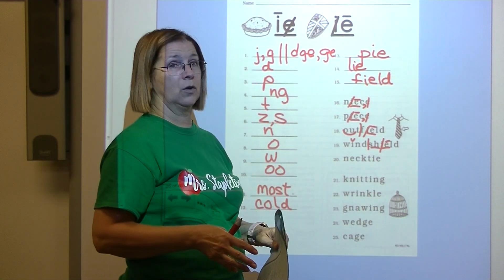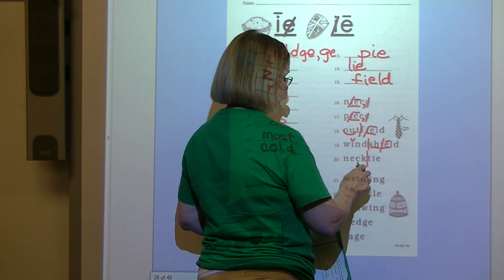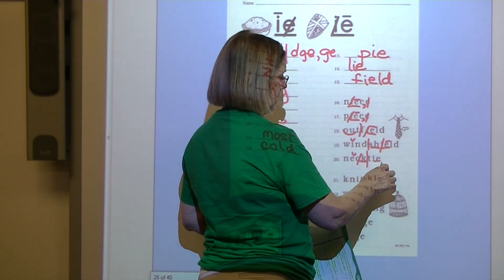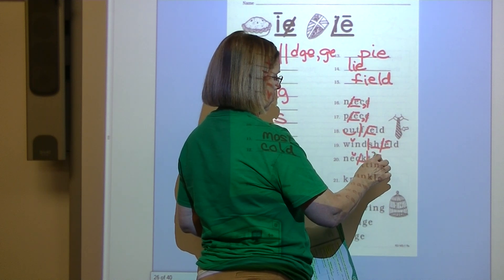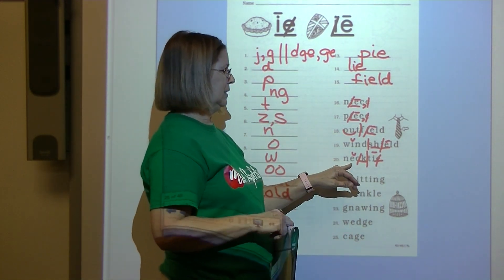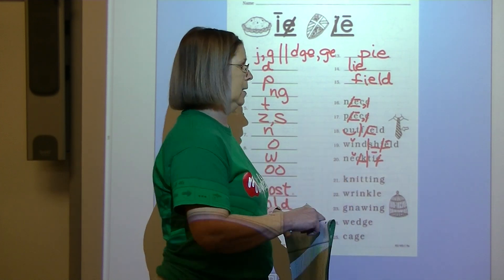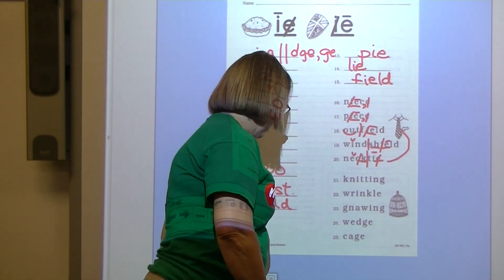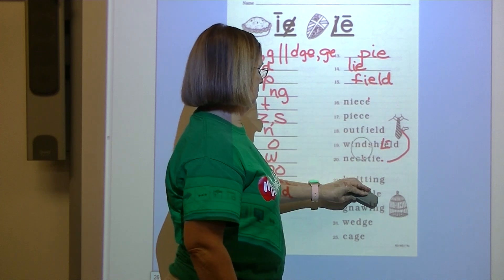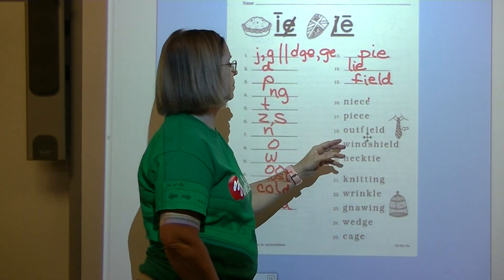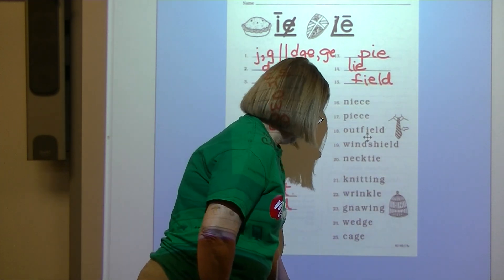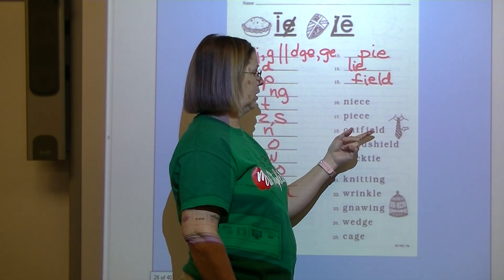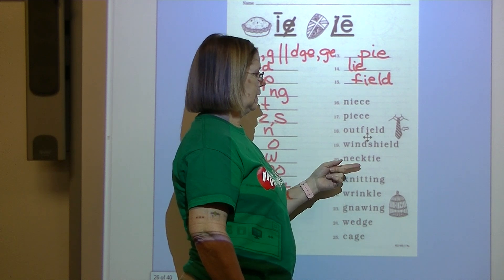Number 20 is also a compound word — divide between the two words. Underline digraph CK, mark out C, put a breve over the E. Underline digraph IE, mark out E, put a macron over the I. That word is necktie — draw a line from the word to the picture of the necktie. Now let's read all the words together: niece, peace, outfield, windshield, necktie.